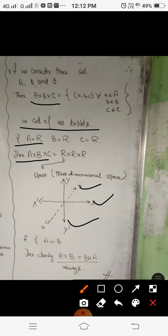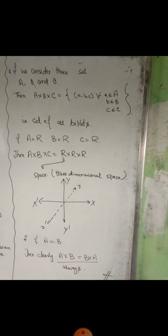A final remark: if A equals B, then clearly A cross B equals B cross A is always true. So if both sets are equal, their Cartesian product is always the same. That was all about the Cartesian product. In tomorrow's video lecture we will discuss the corresponding exercises — how to solve questions on the Cartesian product of two sets. Thank you.